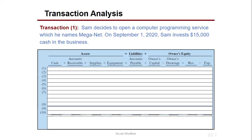The first transaction: Sam decides to open a computer programming service which he names MEGANET. On September 1st 2020, Sam invests $15,000 cash in the business. Because it's double entry, every transaction affects at least two accounts. Cash increases by $15,000, and since Sam is the owner, his ownership increases — so owner's capital is plus $15,000.